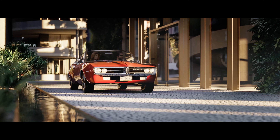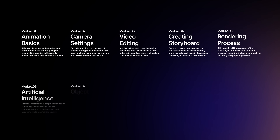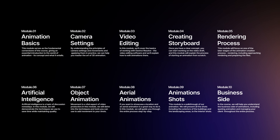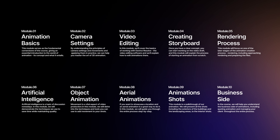Let me tell you more about the course. We'll teach you everything you need to know about architectural animations. The course is well-structured and consists of 10 modules. You will learn the basics of animations, animated cameras, objects, and aerial animations. We go through the process of creating animations step-by-step and video editing. Finally, we show you how to prepare for rendering, how to use AI to speed up the process, and we explain the business side of animations.